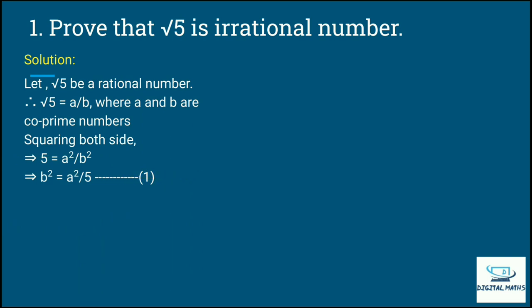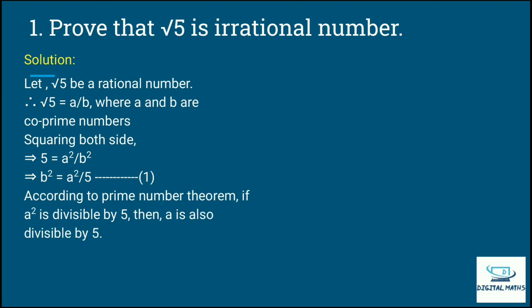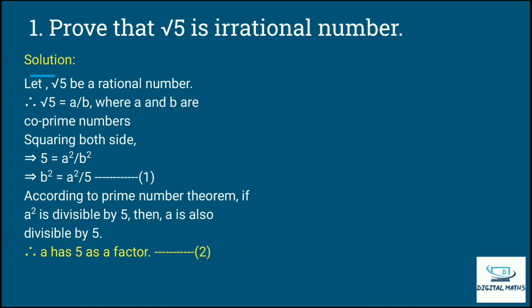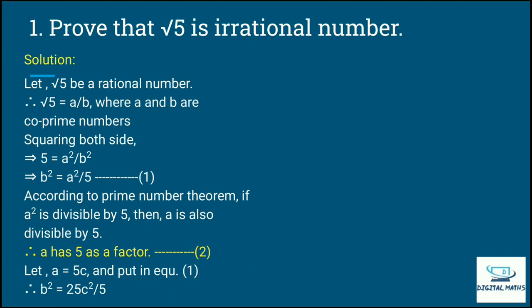Now there is a prime number theorem which I already covered in the introduction part. If a squared is divisible by 5, then a is also divisible by 5. So a has 5 as a common factor. This gives us equation number 2. So I can write a as 5c.